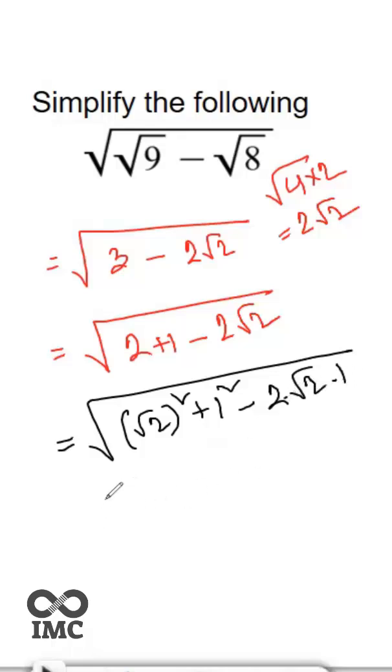From the algebraic formula we know that a minus b whole square equals a square minus 2ab plus b square. So by this formula we can say that will be a square minus 2ab plus b square, or root of 2 minus 1 whole square.